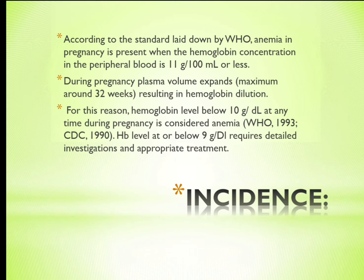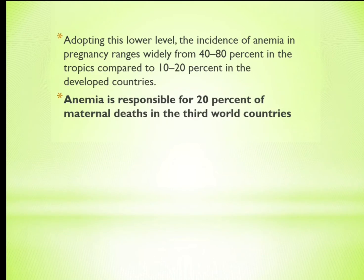Per WHO 1993 and CDC 1990, hemoglobin level below 9 grams per deciliter requires detailed investigation and appropriate treatment. Adopting this lower level, the incidence of anemia in pregnancy ranges widely from 40–80% in the tropics, compared to 10–20% in the developed countries. Anemia is responsible for 20% of maternal deaths in third world countries.